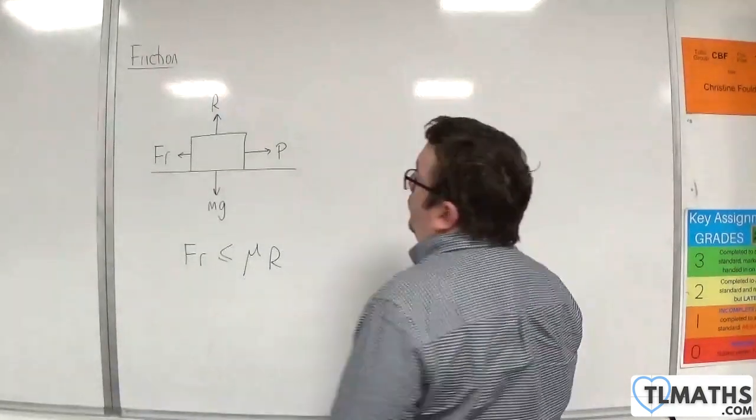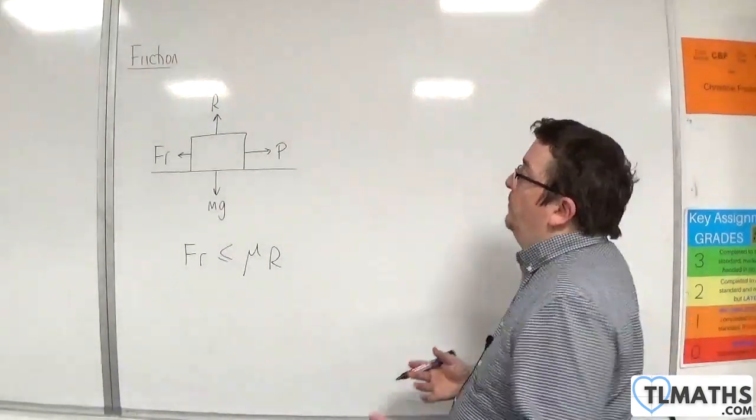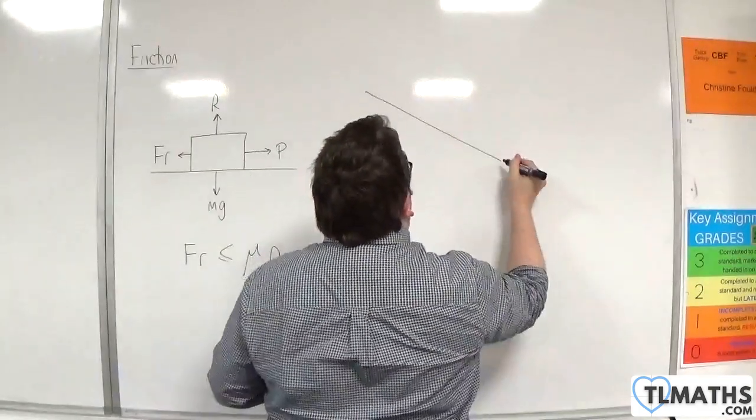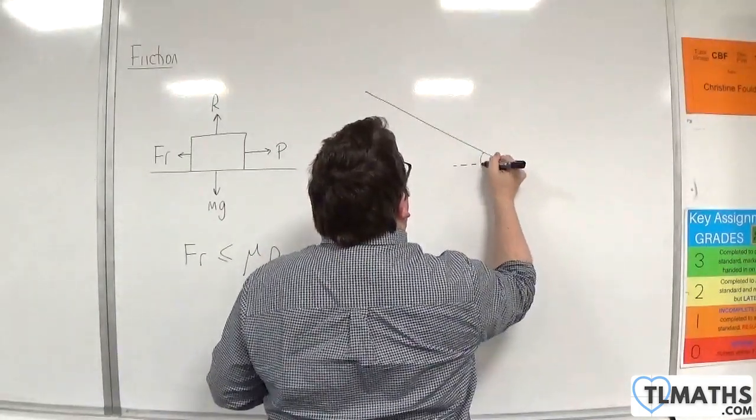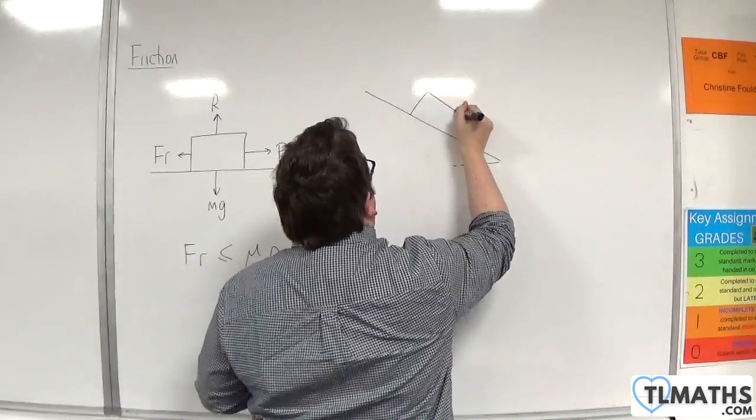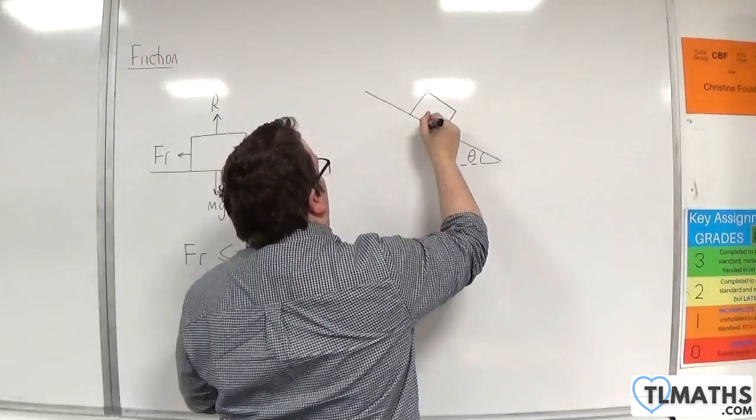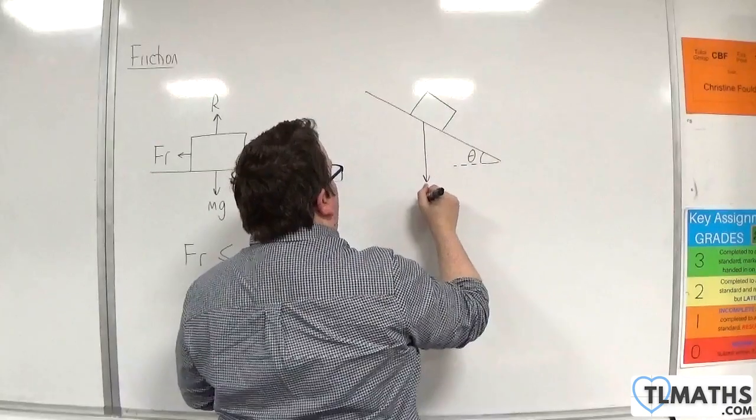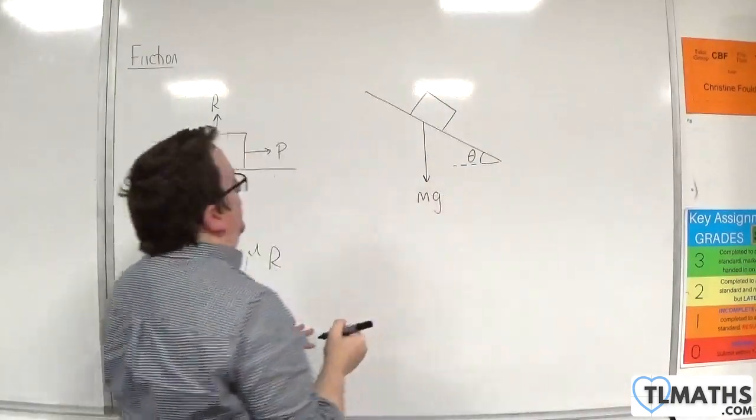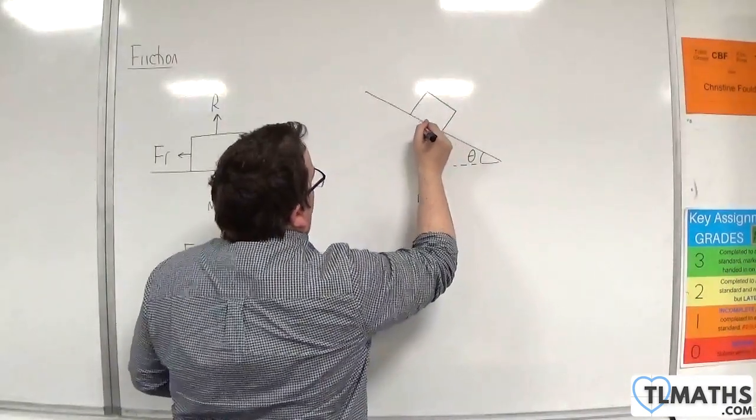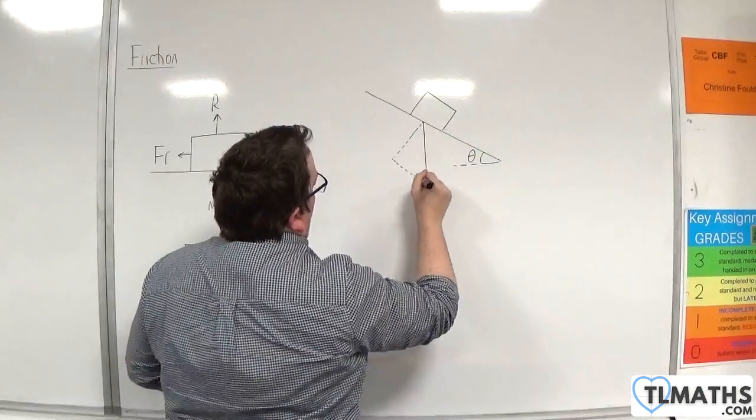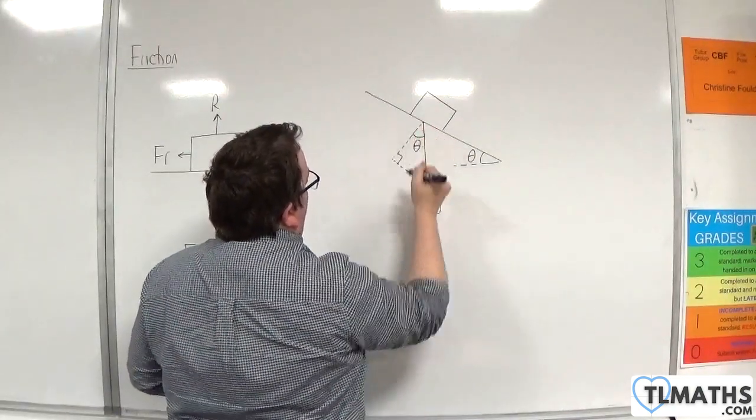Now, we might get situations where we're on a slope. For example, if this is your angle theta, it's really all about making sure that you can label your diagram. The weight has to work vertically downwards. And then, if we complete a right-angled triangle, this angle will also be theta.